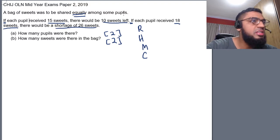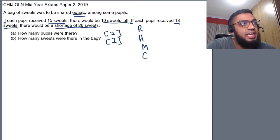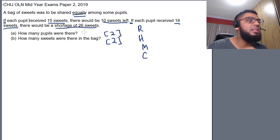This is actually a gaps and difference question. Whereby the first if is telling us that if we were to give 15 sweets to each student, there will be 10 sweets left. So, this is actually an excess. The second if, if each pupil received 18 sweets, there will be a shortage of 26 sweets. So, the second is actually a shortage. Another word for gaps and differences is excess and shortage. Immediately when we see these double ifs, we draw ourselves two models.